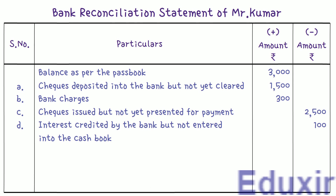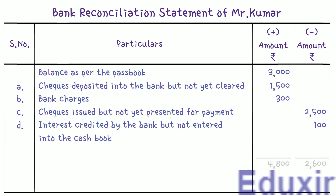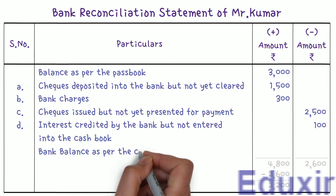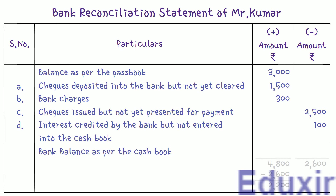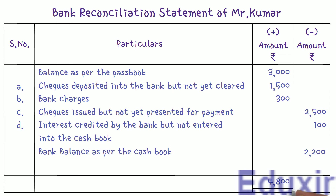We have completed recording all details into the bank reconciliation statement. The next step is to find the balance as per the cashbook. The total of all entries in the plus amount column is Rs. 4800, and the total of all entries in the minus amount column is Rs. 2600. Subtracting Rs. 2600 from Rs. 4800 gives Rs. 2200. This is the cashbook balance. We record it as 'bank balance as per cashbook' of Rs. 2200 in the minus amount column, making both column totals equal at Rs. 4800.